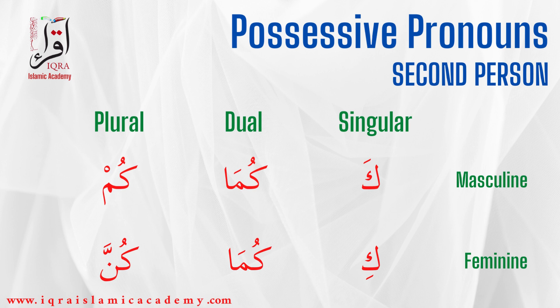For feminine: Ki for singular, Kuma for dual, and Kunna for plural. Ka means 'your', Kuma means 'your' (dual), Kum means 'your' (plural). The dual and plural forms are the same in English — just 'your'. It is the same in English.